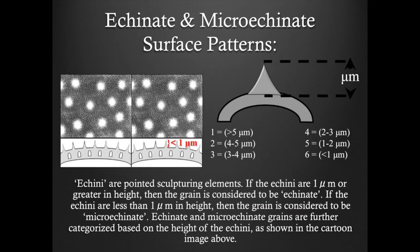If the spines are more than one micrometer in height, then the grain is considered to be echinate. If the echinae are less than one micrometer in height, then the grain is considered to be microechinate. Echinate and microechinate grains can be further categorized based on the height of the echinae, as shown in the cartoon image above.